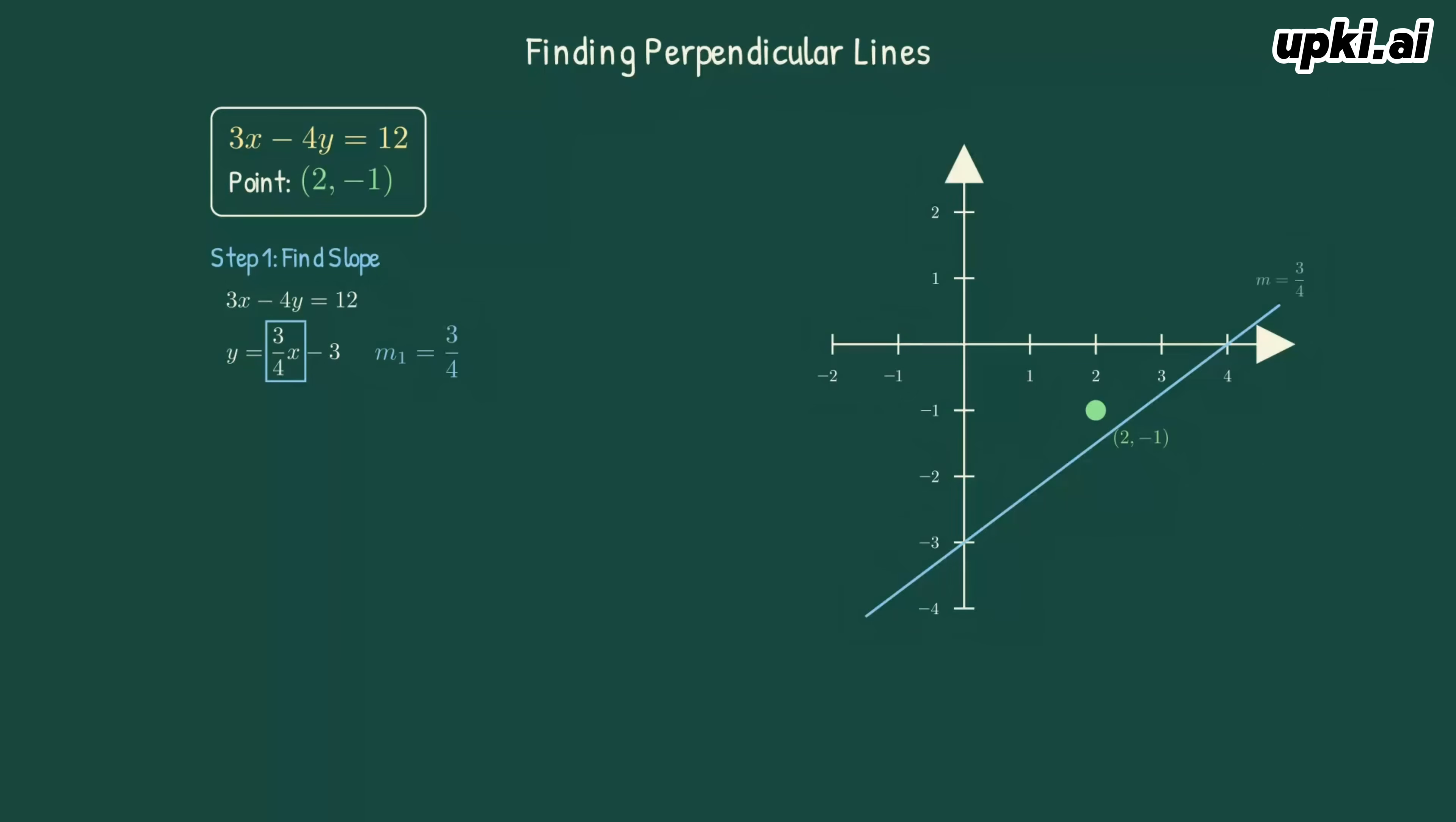Here's the original line on our graph. Step 2. Perpendicular slopes multiply to negative 1. Solving gives us M2 equals negative 4 thirds. The perpendicular line meets at a 90 degree angle. Let's visualize this.